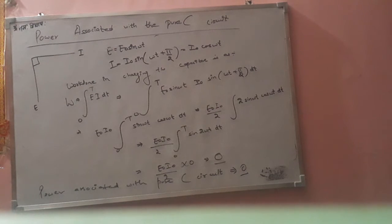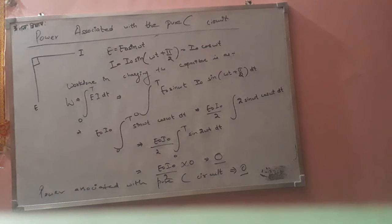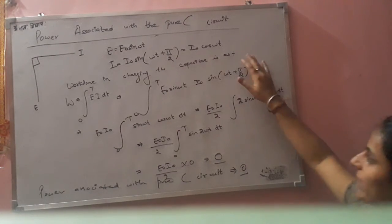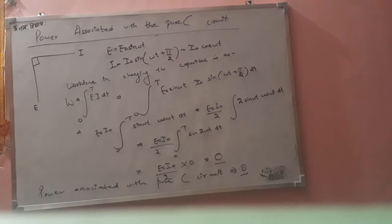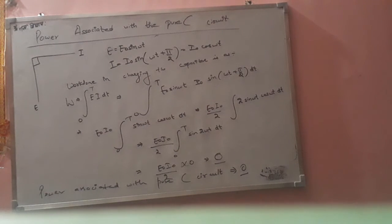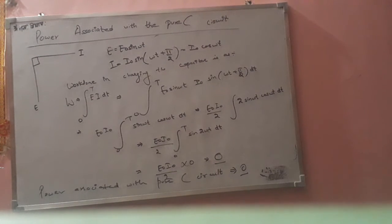Now, what is the work done in charging the capacitor? In order to charge the capacitor, some work has to be done, and that work done is also stored as the energy in the capacitor. The energy stored in the capacitor has the expression one-half C·V-squared.